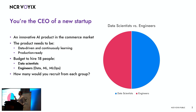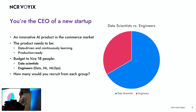Any votes for 50-50? More engineers? More data scientists? Fair enough. All engineers? All data scientists?